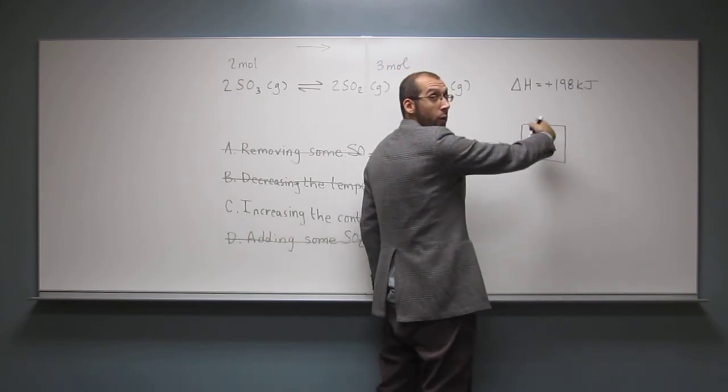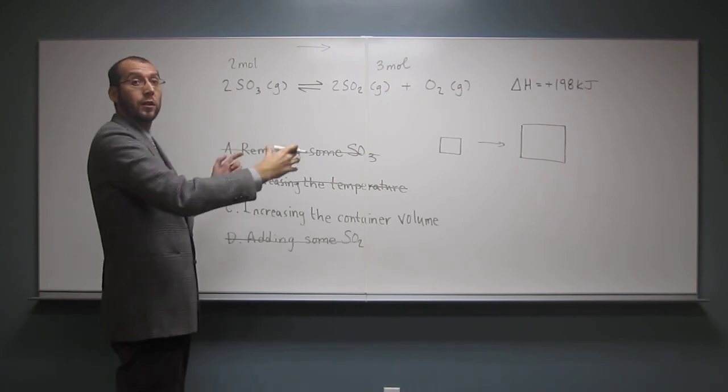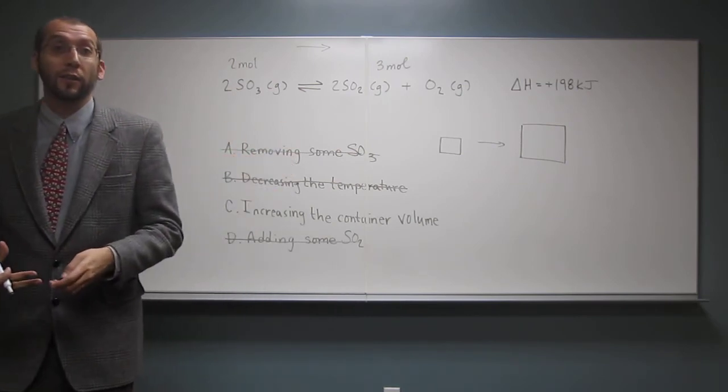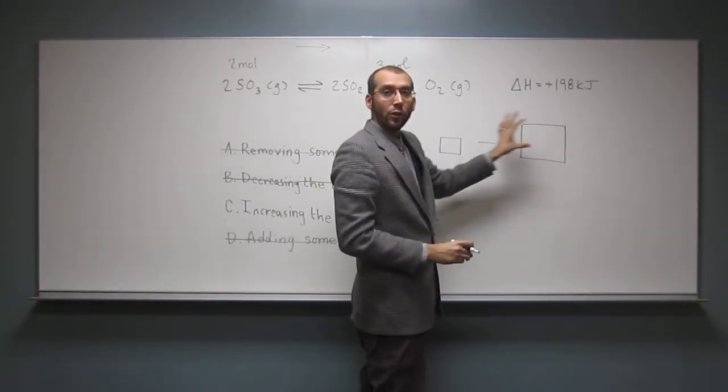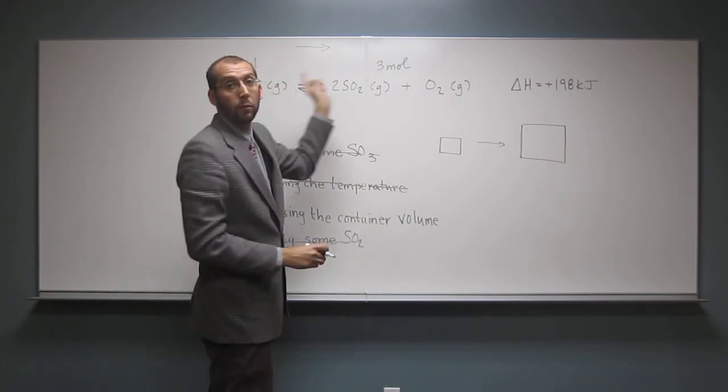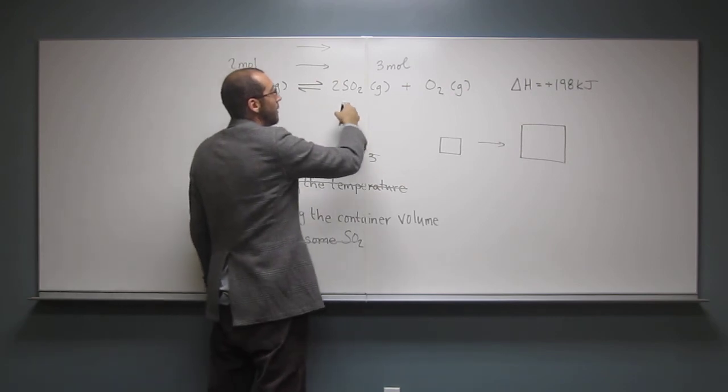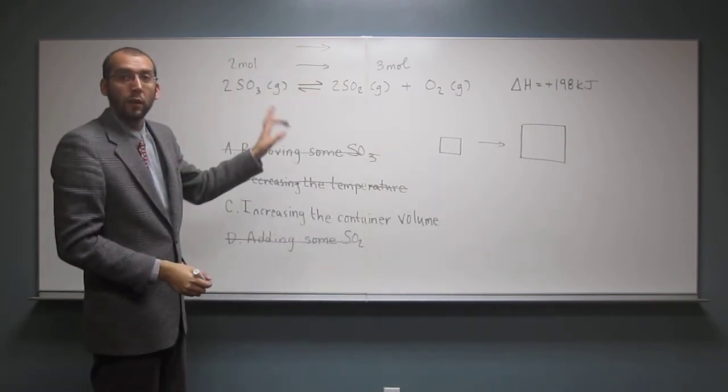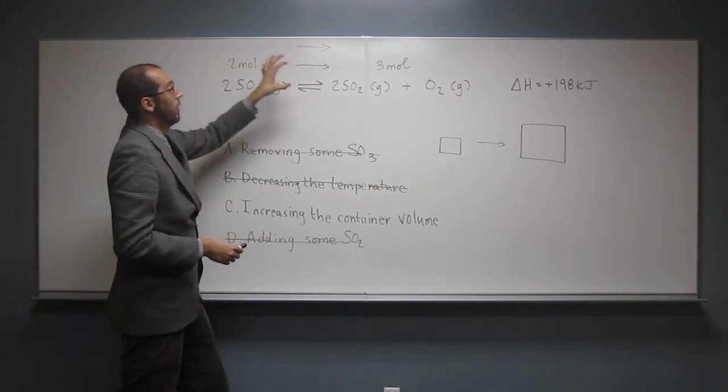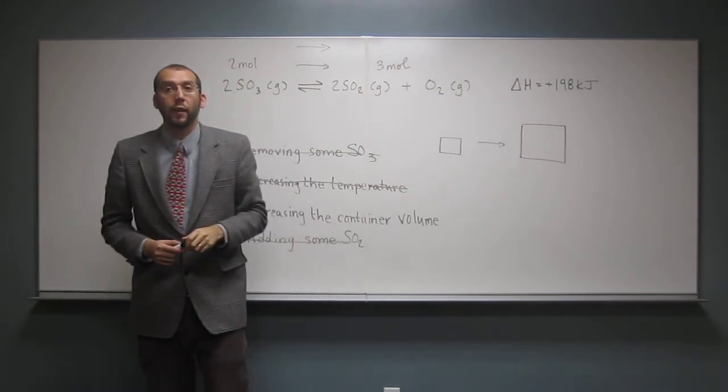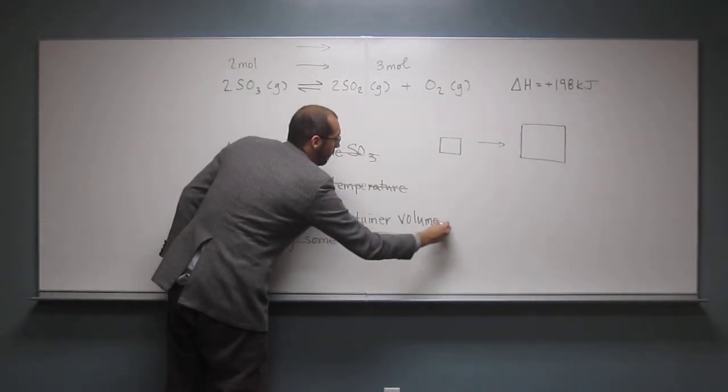So since this can hold more moles of gas, the reaction itself is going to want to go to the side that produces more moles of gas. So if we did this to the volume of the container, it's going to shift the equilibrium to the right. So that one actually doesn't really have anything to do with the types, like removing a particular reactant or product or something like that, but the actual total number of moles of gas. So let's just box the answer just to make it official.